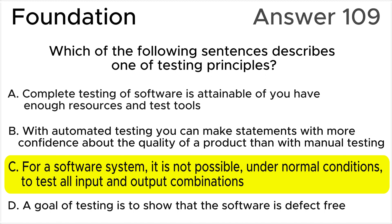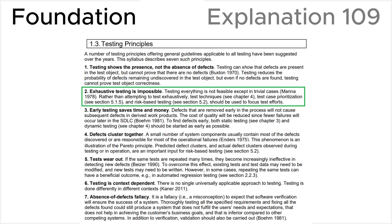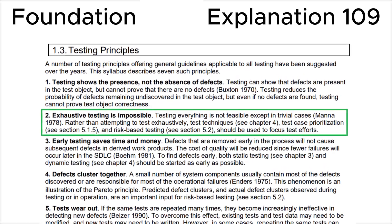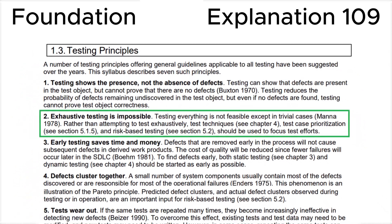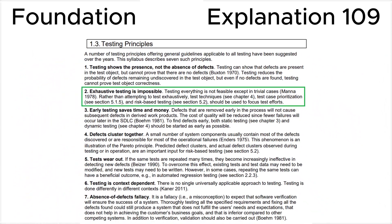Finally, let's look at section 1.3, Testing Principles, in the ISTQB syllabus, where we can see that testing principle 2 states: exhaustive testing is impossible — testing everything is not feasible except in trivial cases. Rather than attempting to test exhaustively, test techniques, test case prioritization, and risk-based testing should be used to focus test efforts. This leads us to the correct answer, C.